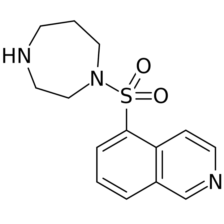ACE expression. Angiotensin converting enzyme, ACE, is an enzyme that catalyzes the conversion of angiotensin I to angiotensin II. Angiotensin II is a peptide hormone which increases blood pressure by initiating vasoconstriction and aldosterone secretion. ROCK increases ACE expression and activity in pulmonary hypertension. By inhibiting ROCK with fasudil, circulating ACE and angiotensin II are reduced, leading to a decrease in pulmonary vascular pressure.